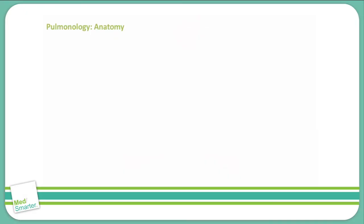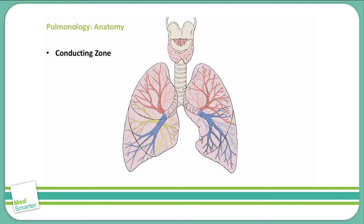Next, we'll talk about pulmonology. Let's start out with some basic anatomy of the lungs. The first thing you see in this image is the conducting zone. The conducting zone are the large airways that consist of the nose, the pharynx, and then down further the larynx, the trachea, and it branches off into the bronchi.